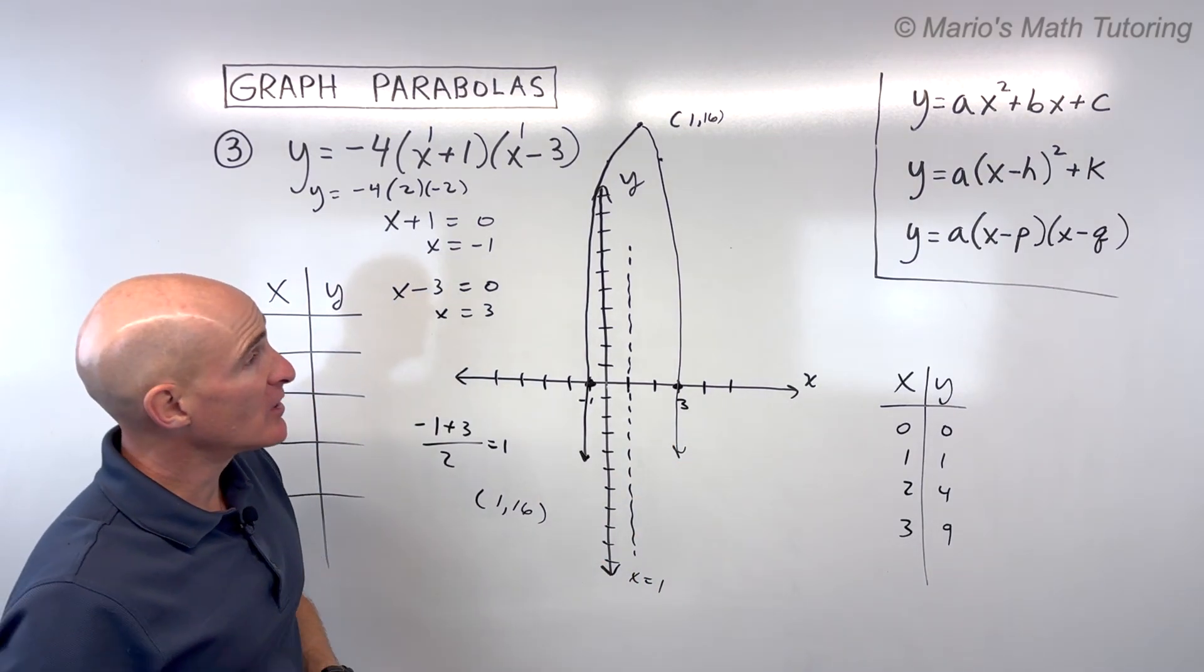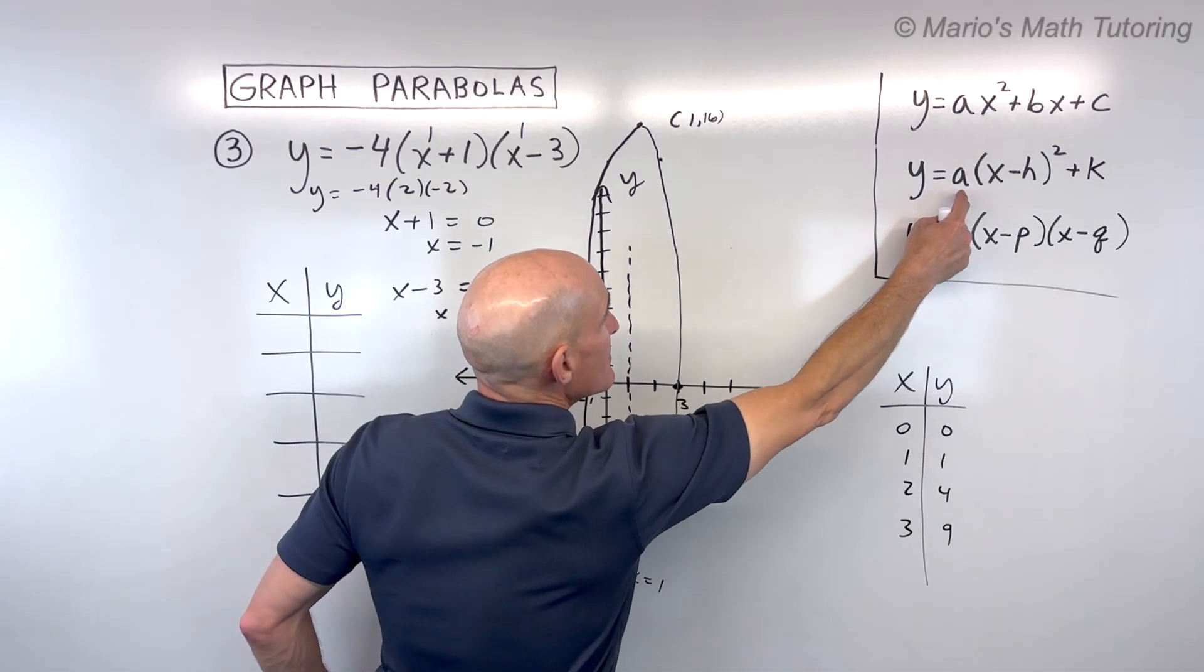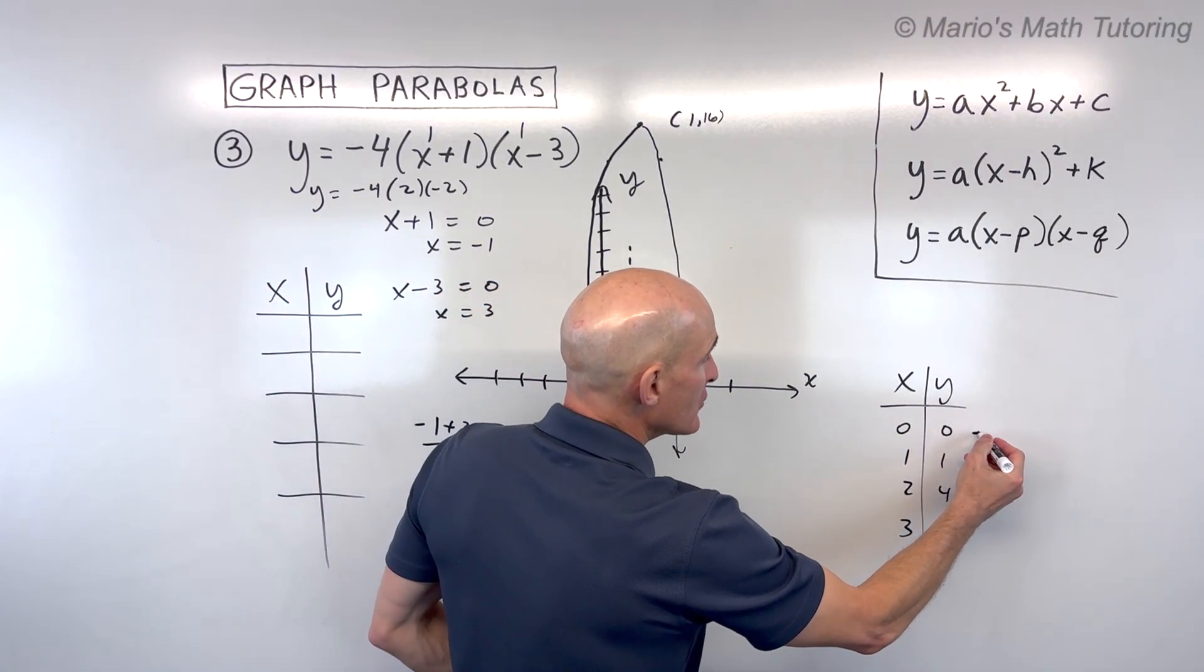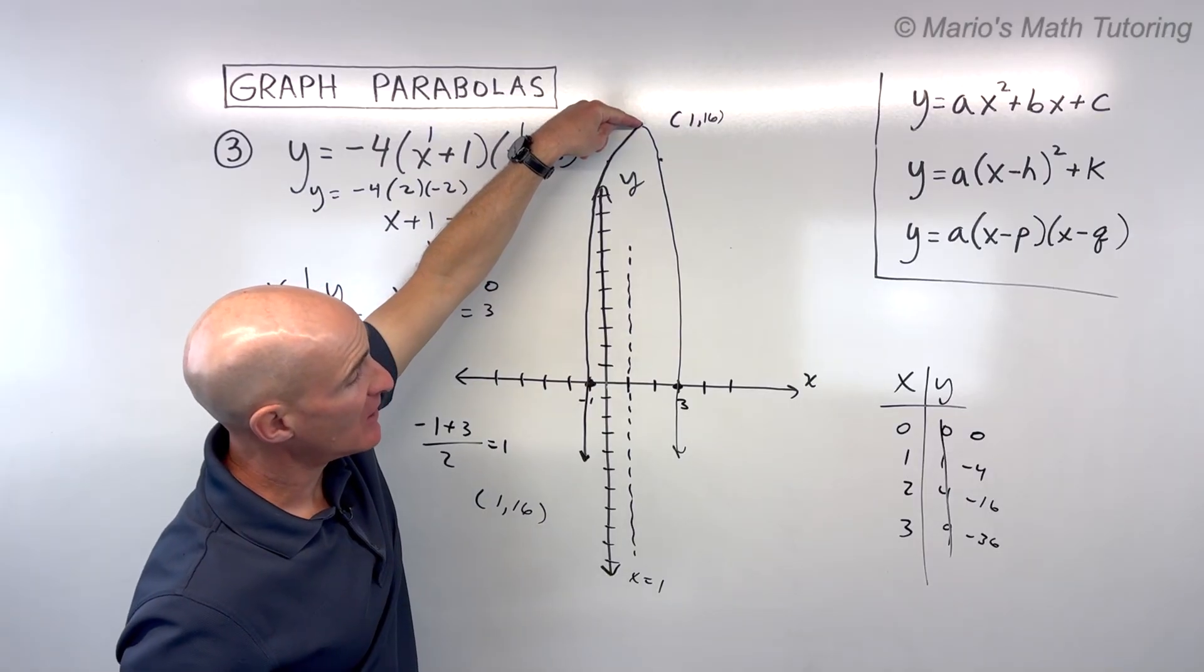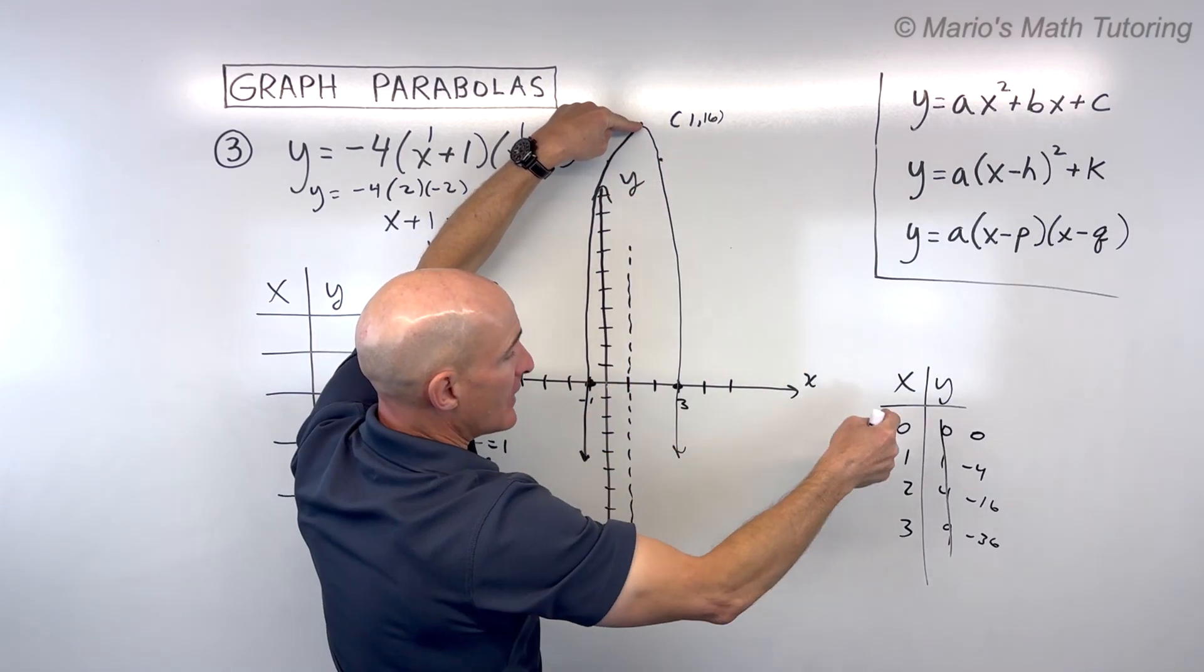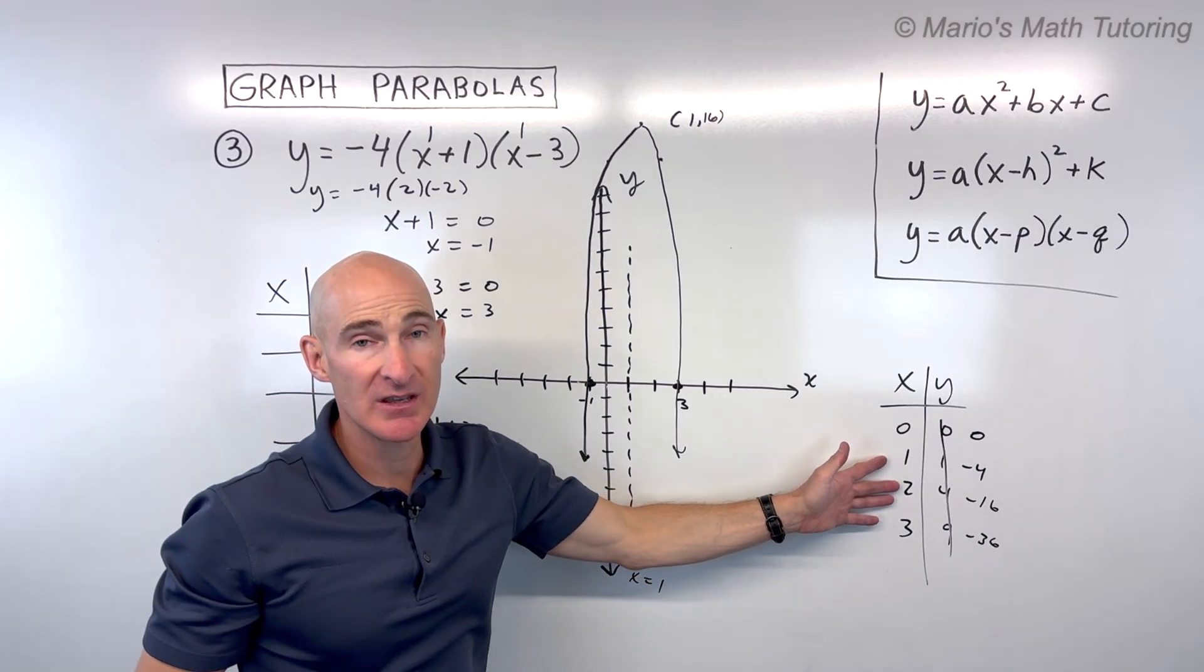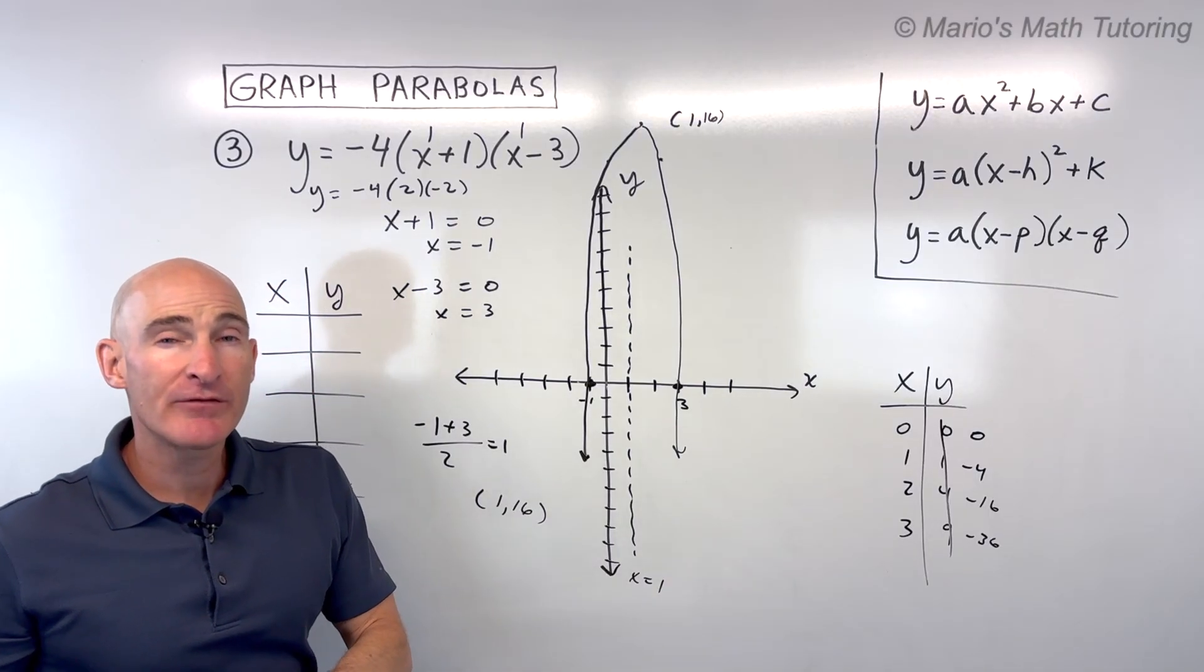So that's a quick way of doing it when it's in the intercept form. Now the shortcut method is going back to the parent function, y equals x squared. Notice this a value. It's the same as this a value. And that negative 4 is stretching the graph. It's also reflecting the graph, which makes it open down. So I can multiply all these y values by negative 4. What I can do is treat this vertex like it's the origin. If I go right 1, I would go down 4. So you can see 16 minus 4 is 12. That's what we got for these points. And if I was to go right 2, I would go down 16, which you can see that's right on the x-axis. Same thing here. So that's a quick way to just work from the vertex using the parent function, this ax squared function.